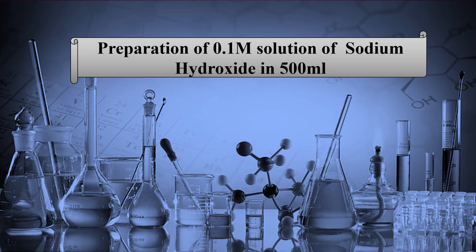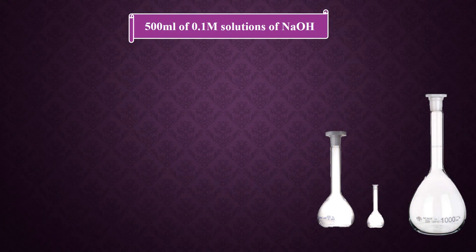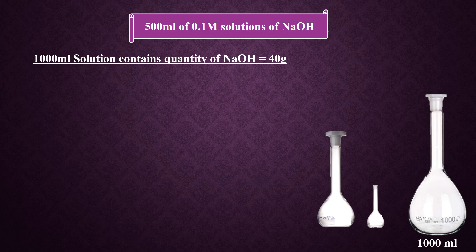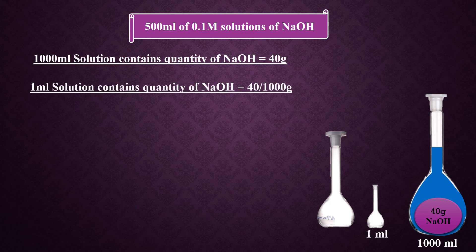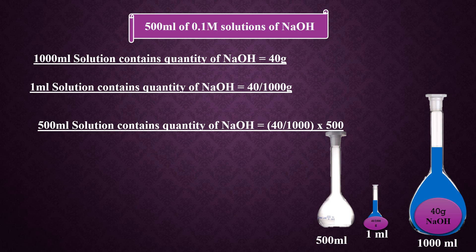Now let's prepare a 0.1 molar solution of sodium hydroxide in 500 milliliters. First, we need to calculate the mass required. 1000 milliliters contains 40 grams of sodium hydroxide. 1 milliliter contains 40 divided by 1000 grams. 500 milliliters contains 40 divided by 1000 multiplied by 500, giving 20 grams. Multiply 20 by 0.1 (since we want a 0.1 molar solution), and after calculations we get 2 grams.